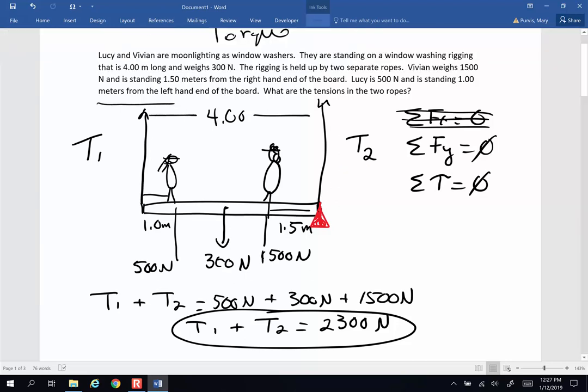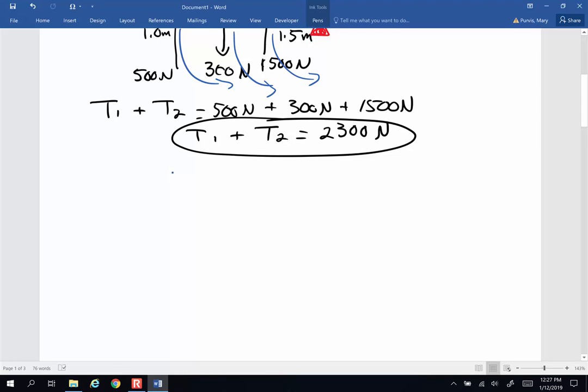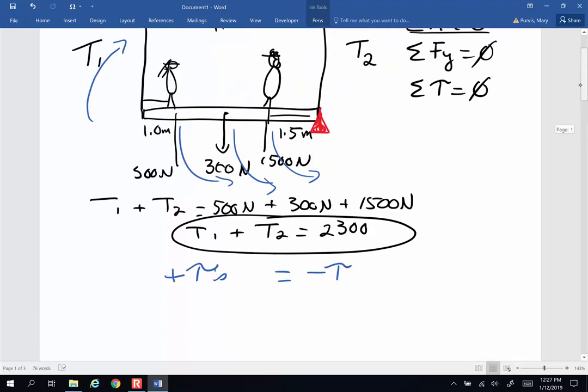By putting it under T2, T2 will not produce any sort of a torque because there is no lever arm between T2 and my pivot. Now of my other forces, this torque is going to cause the whole system to rotate in a clockwise method. These torques, Lucy, the rigging, and Viv, are all going to cause them to pivot in a counterclockwise method. So in order for it to be in equilibrium, I am going to have my positive torques, which are my counterclockwise torques, equal to my negative torques, which are my clockwise torques.